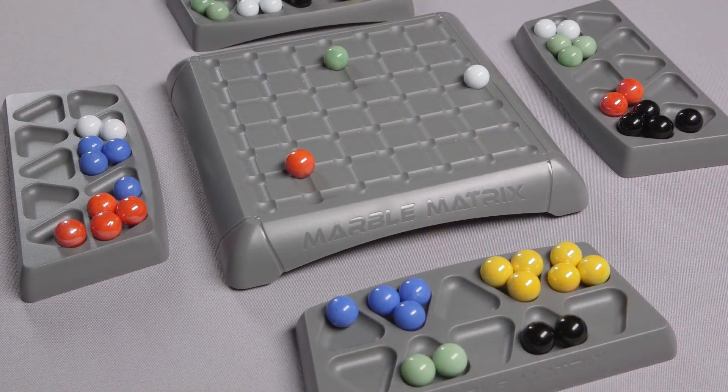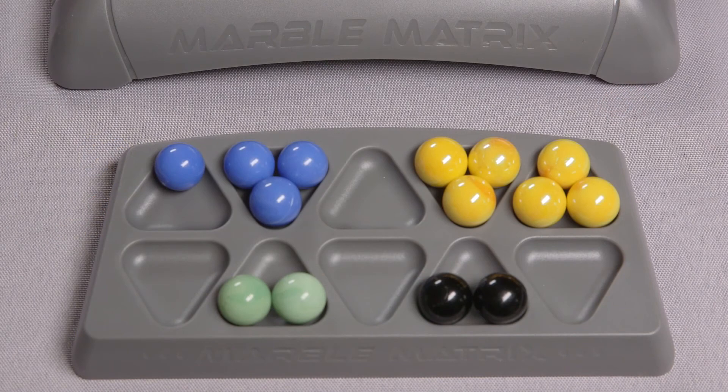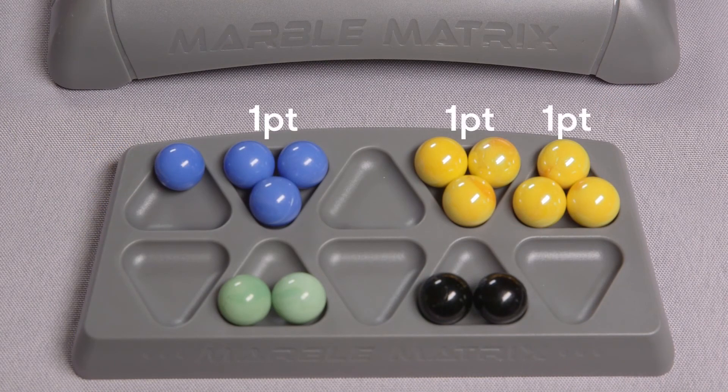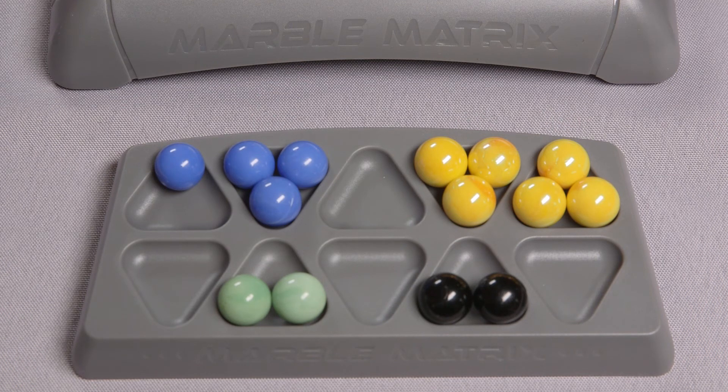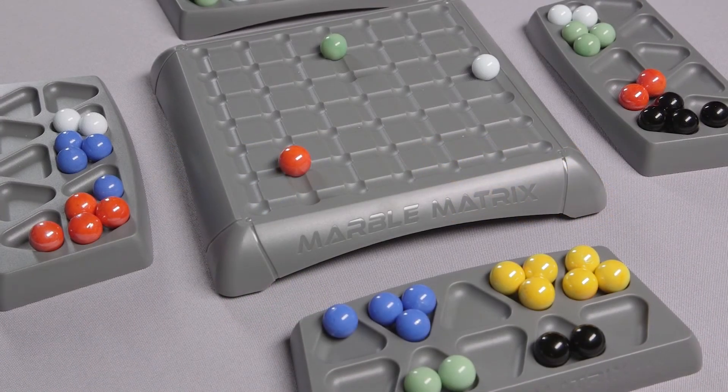The game ends when a player is unable to collect any marbles after two slides. Players count their marbles and score one point for each set of three matching color marbles in their tray. Players do not earn points for leftover pairs or single marbles. The player with the most points wins.